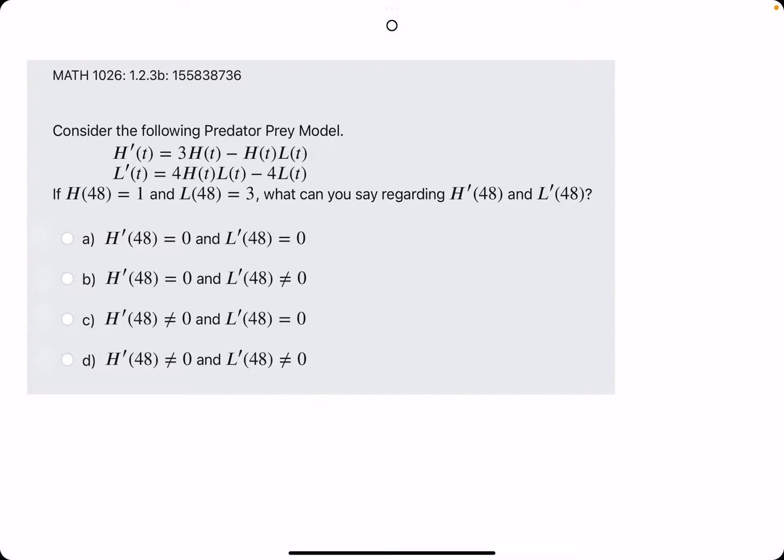In this problem, they give us a predator-prey model with H' and L'. They give us H values and L values, specifically at the time value 48. And then they say, what can you say regarding H' at 48 and L' at 48?